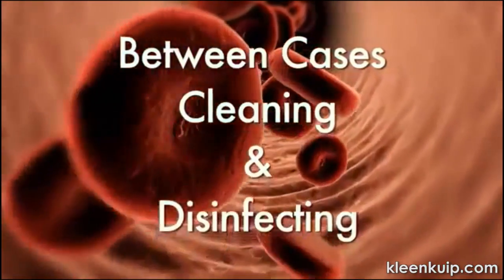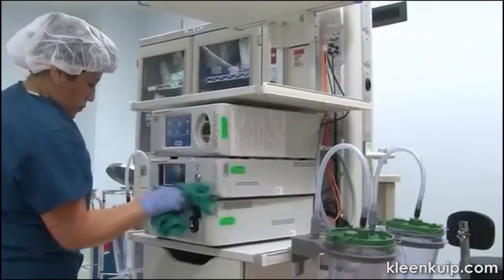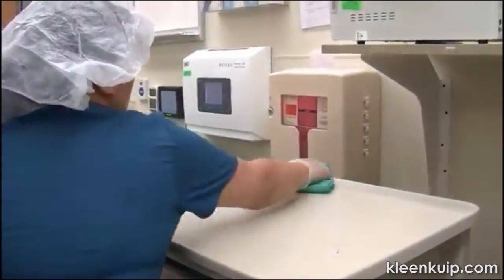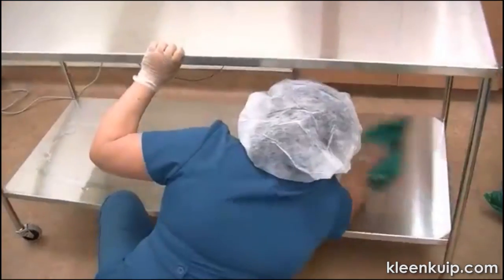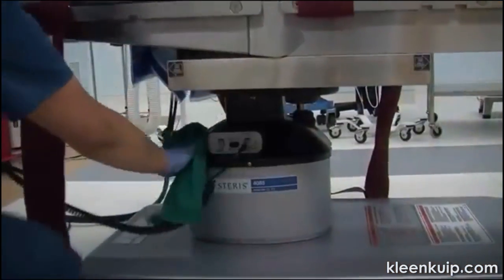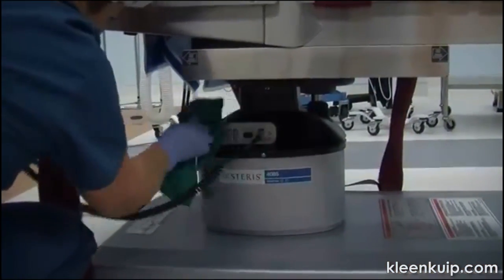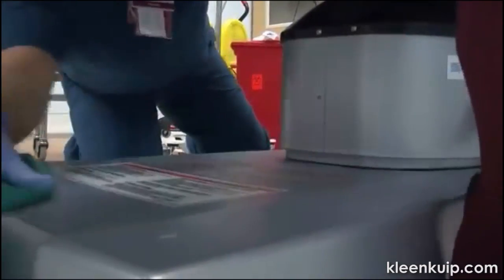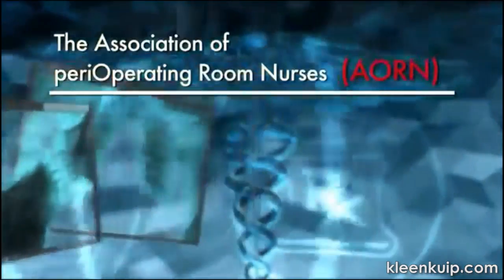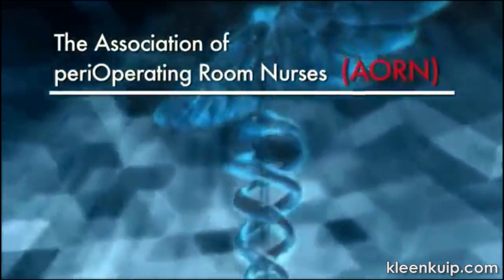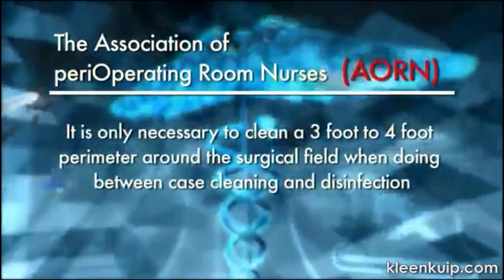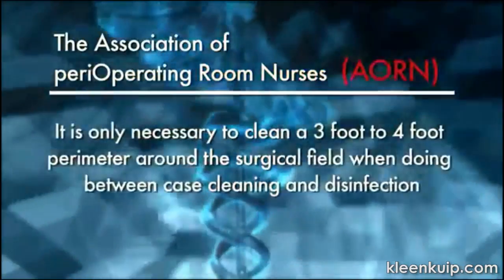Between cases cleaning and disinfecting: a very brief time is generally allotted for cleaning and disinfecting between surgery cases in the operating room. While terminal cleaning focuses on thorough cleaning of all aspects of the room, between cases cleaning deals with cleaning and disinfecting the sterile field around the operating table. The object is to reduce dust, debris, and organic matter within the surgical field. The Association of Peri-operative Nurses states that it is only necessary to clean a 3-foot to 4-foot perimeter around the surgical field when doing between case cleaning and disinfection.